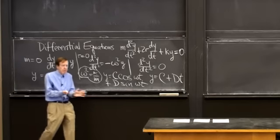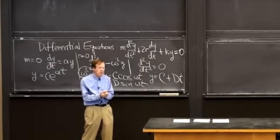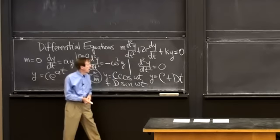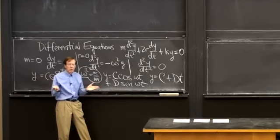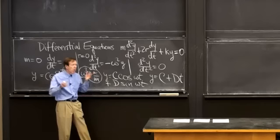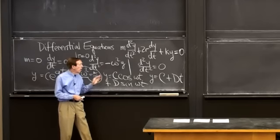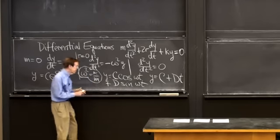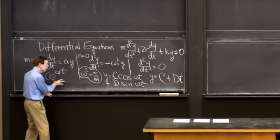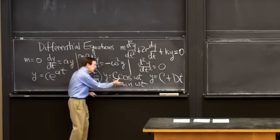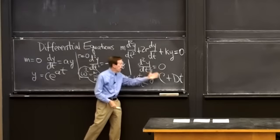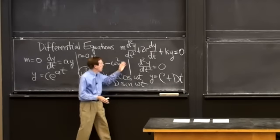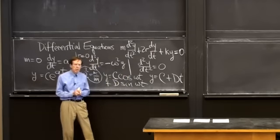Here's the key point of this lecture: the solutions to this equation, and in fact to equations of third, fourth, and all orders, are products of the functions we already know — exponentials times sines and cosines times powers of t. That's all we need to solve constant coefficient differential equations.